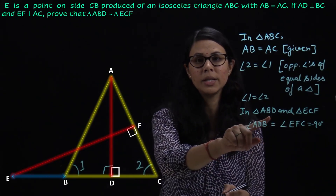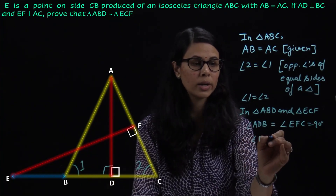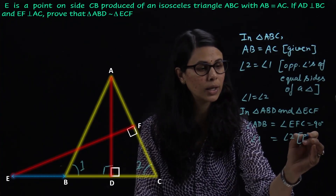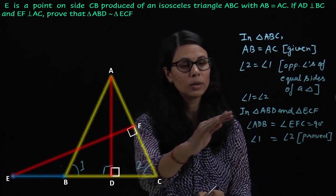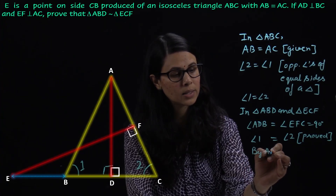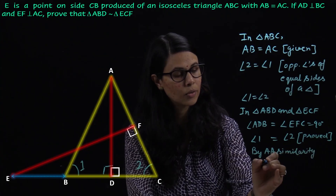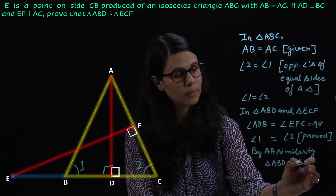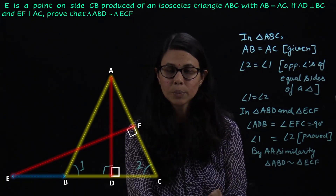Ab dekhiye, triangle ABD ka angle 1 aur triangle ECF ka angle 2 bhi aapas mein equal hain, jo humne pehle proof kiya hai. Ab dono triangles mein dono corresponding angles equal hain. It means by AA similarity, triangle ABD is similar to triangle ECF — aur yahi humko yahan proof karna tha.